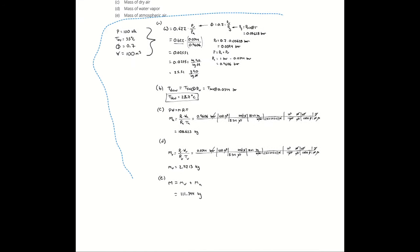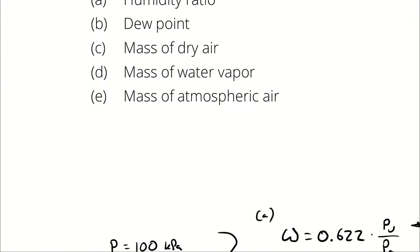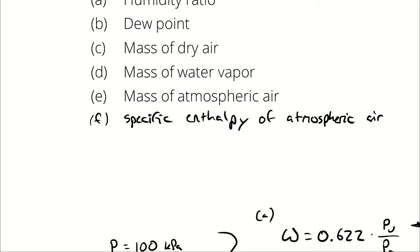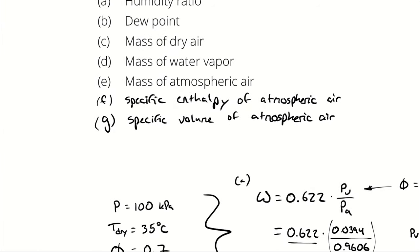That gets us through parts A through E. But I think we can calculate a couple more things while we're here, just in the interest of character building. Let's say there's a part F and a part G. For part F, I want to know the specific enthalpy of the atmospheric air, and for part G, the specific volume of the atmospheric air. Remember that because these are specific quantities, they're going to be per unit mass of dry air, not per unit mass of atmospheric air.